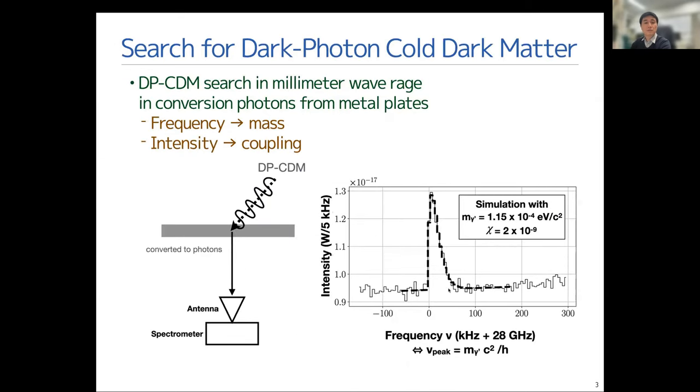I'll show some principles for the search for dark photon cold dark matter. In our experiment, if dark photon enters a metal plate, it interacts with electrons through the electromagnetic field very weakly. Then, finally, it's converted to real photons.